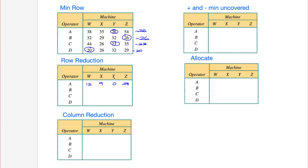Continuing: taking 26 from row B gives us 6, then 0 (26 minus 26), 39 minus 26 is 13, 32 minus 26 is 6, and 26 minus 26 is 0. Taking away 23 from row C: we get 21, then 3, then 0, then 35 minus 23 is 12. Finally, taking away 20 from row D: 0, 6, 12, and 9.